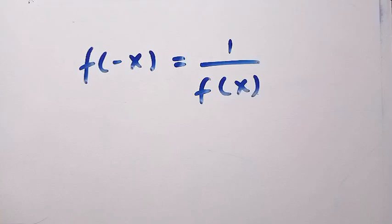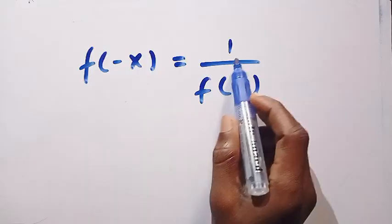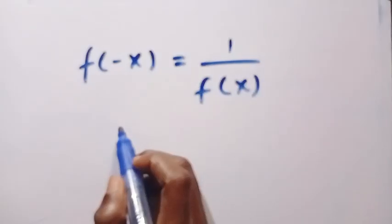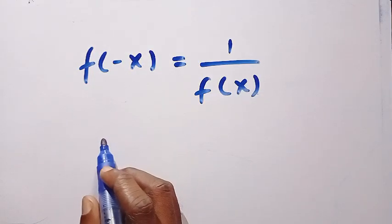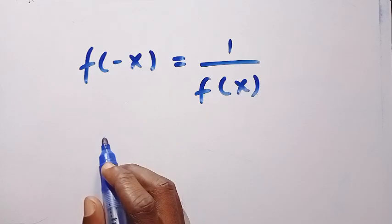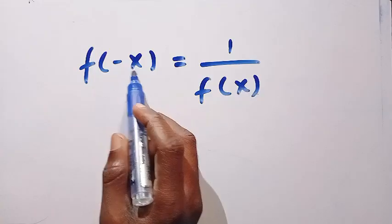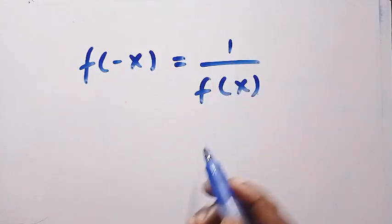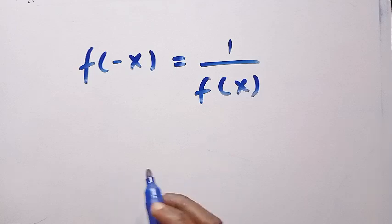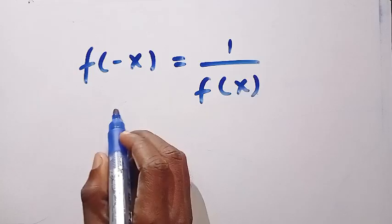Good day viewers. We are given f of minus x equals 1 divided by f of x, and I want to find f of x. We have to note that this is a functional equation that is not fully determined, and there are many functions that satisfy f of minus x equals 1 divided by f of x. I'll be showing you different functions that satisfy this and functions that do not. So let's get into it.